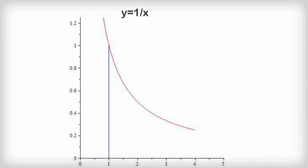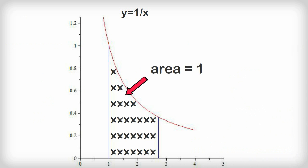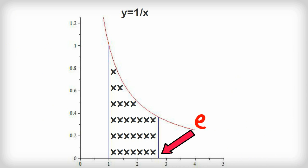Take the graph Y equals 1 over X. Draw the vertical line X equals 1, then draw another vertical line so that the enclosed area is exactly 1. That second vertical line is at X equals E.